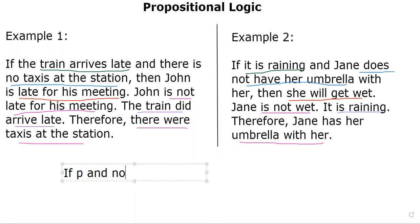And some not q, then some conclusion happens. Then either he's late for his meeting on the left hand side or she will get wet. Let's call it r. So, if p and not q, then r. That's the first sentence from both examples.